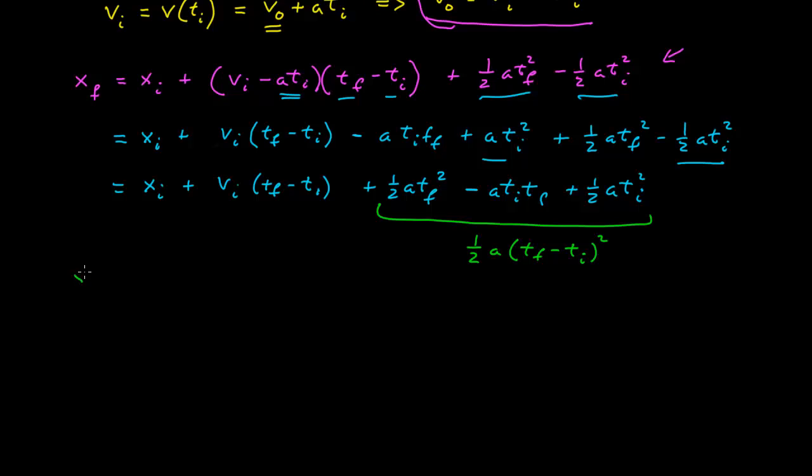So how does all this come together? I can recombine these terms, and so I get x i plus v i t f minus t i. And so this is plus one-half A t f squared. I'm going to write this in a suggestive manner, minus A t i t f plus one-half A t i squared. And you might immediately recognize that this is one-half A t f minus t i squared.